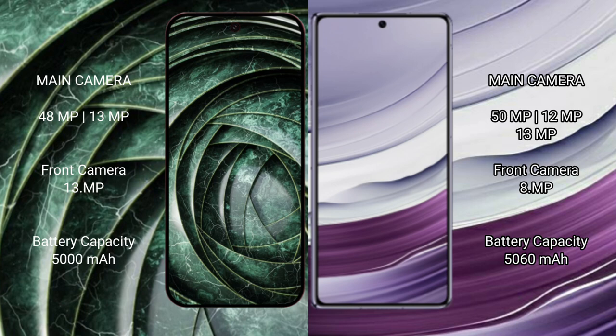Google Pixel 9a has a 5000 image battery with 18W fast charging support. Wahabamate X5 has a 5600 image battery with 66GB fast charging support.